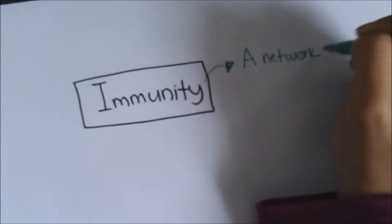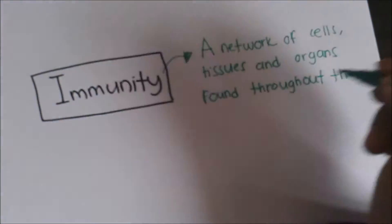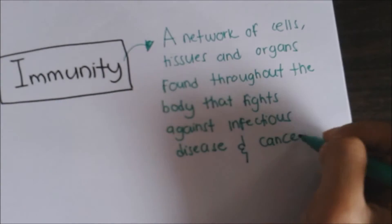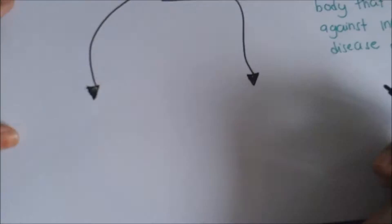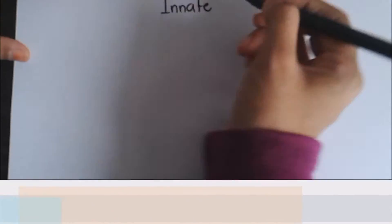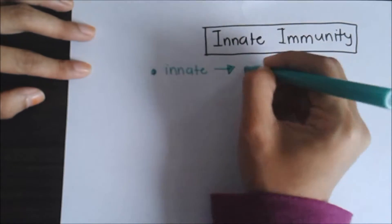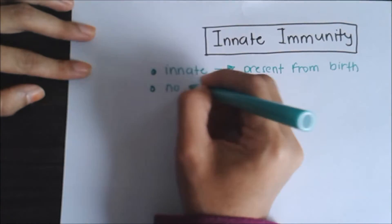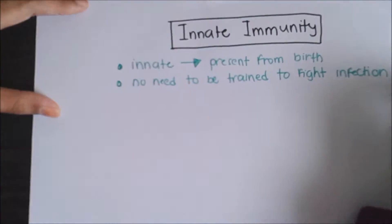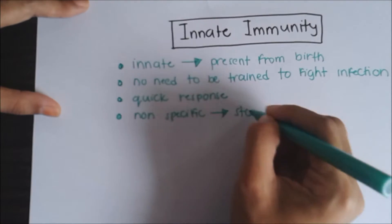Immunity is a network of cells, tissues and organs found throughout the body that fights against infectious disease and cancers. It is divided into innate immunity and adaptive immunity. Innate immunity means it is present from birth, which means that our body doesn't need to be trained to fight infection. It is quick in response and non-specific, which means that it will stop any type of microbe.